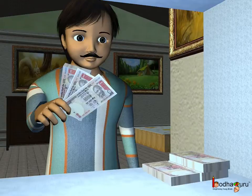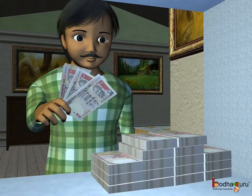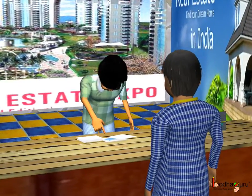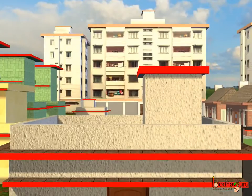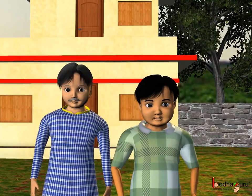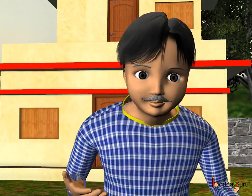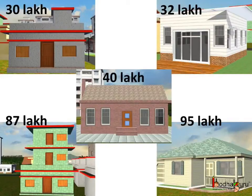In the story we saw a person who continued to save money for many years to buy his dream house. Finally when he had 45 lakhs, he went to the real estate agent in search of his dream house. The agent showed him many houses, all with different prices starting from 30 lakhs to the very expensive house of 95 lakhs. There were many houses to choose from — how to make a choice?